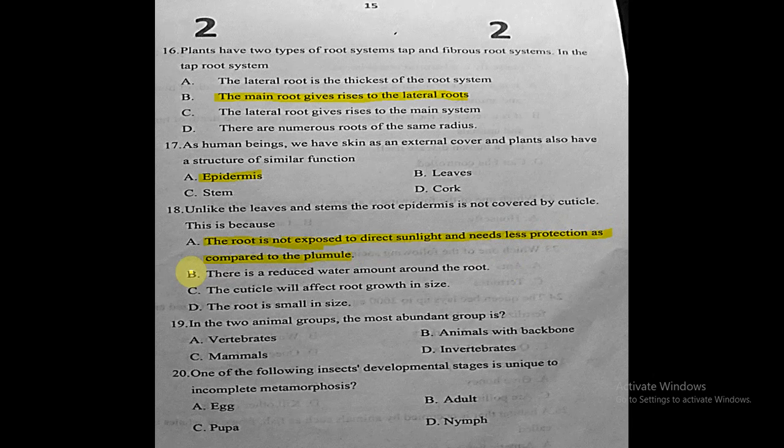Question nineteen: in the two animal groups — vertebrates and invertebrates — the most abundant group is what? The correct answer is invertebrates. Invertebrates are more abundant, as stated in the grade seven textbook.